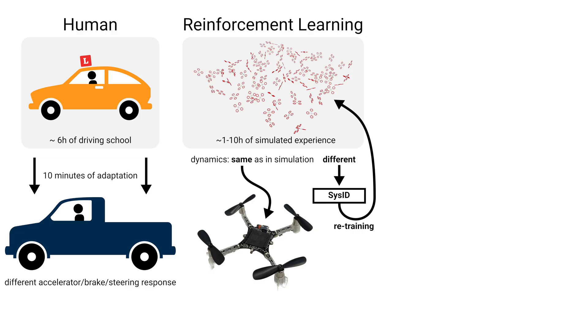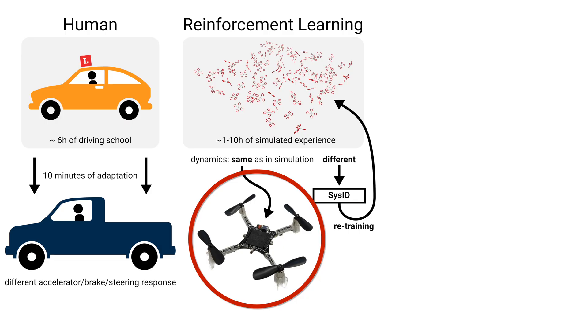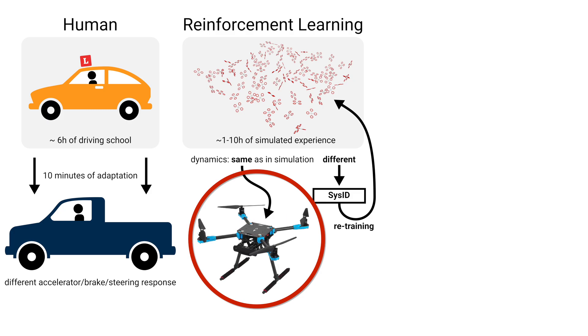Each RL policy is trained for a particular quadrotor. If we modify the dynamics by, for example, changing the payload, or if we want to deploy the policy onto a different quadrotor altogether,